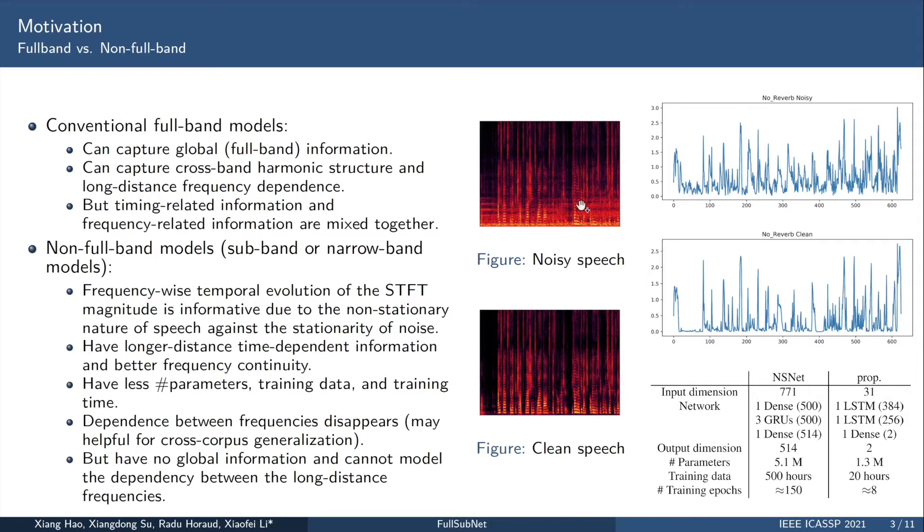For a certain frequency, for example this frequency, we draw it into this figure. The upper part is the noisy speech, and this part is the clean speech. We can find that there, there, and there, here, here, and here, maybe speech because they are non-stationary. And here, here, and here, maybe noise because they are relatively stationary.